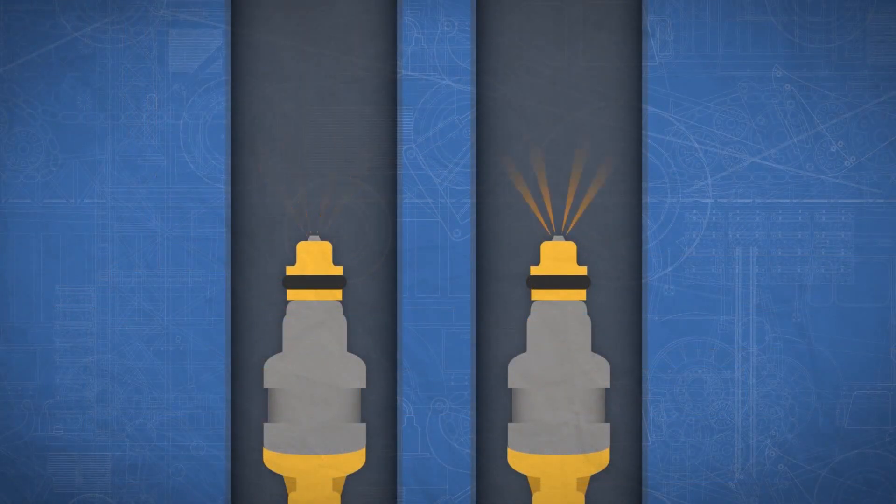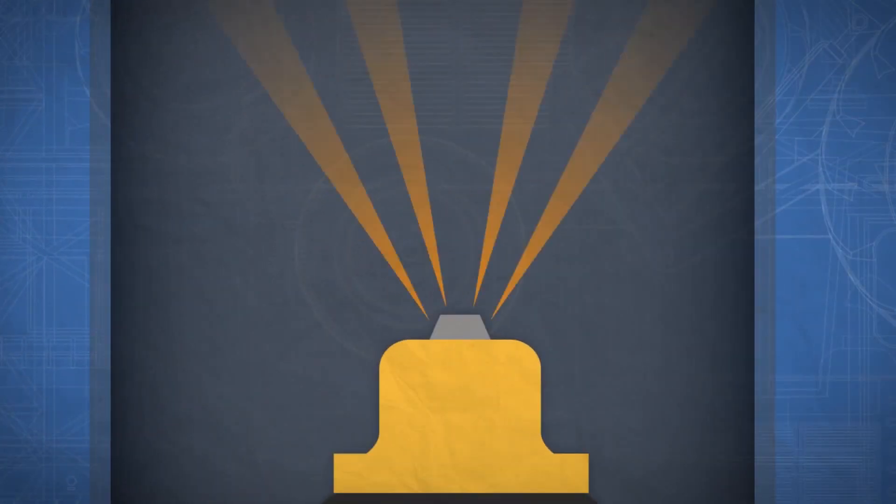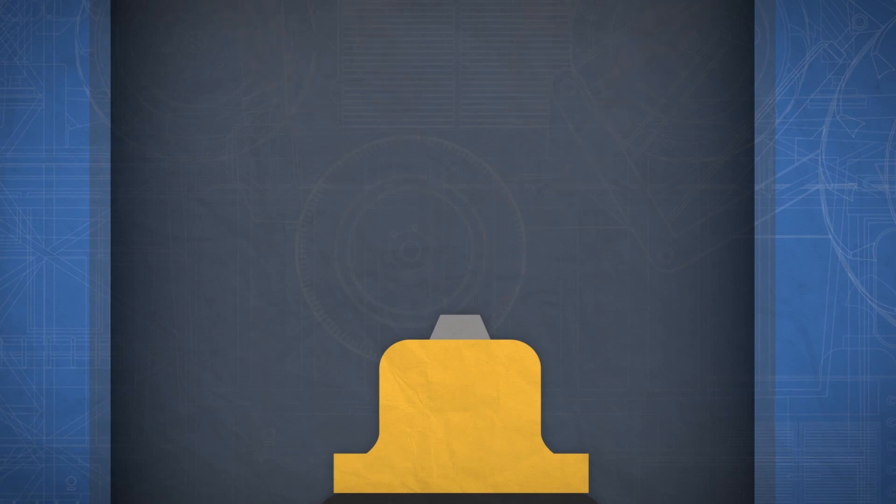Fuel injectors are incredibly precise. They use nozzle openings as small as 2 to 3 microns, which is 20 times smaller than a human hair, to deliver a precise quantity of fuel in a well-defined spray pattern.